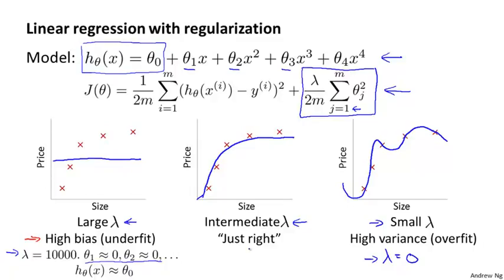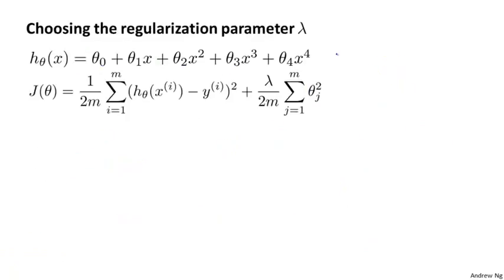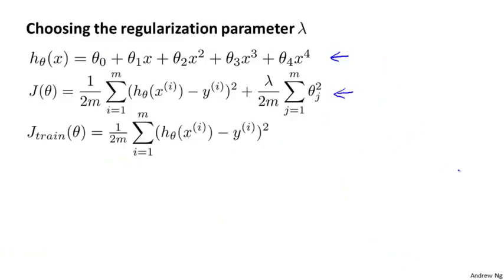So how can we automatically choose a good value for the regularization parameter lambda? Here is our model and our learning algorithm's objective. For the setting where we're using regularization, let me define J_train of theta to be the optimization objective but without the regularization term. Previously, when we were not using regularization, I defined J_train of theta to be the same as J of theta as a cost function.